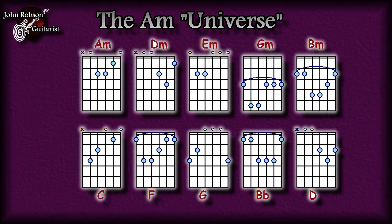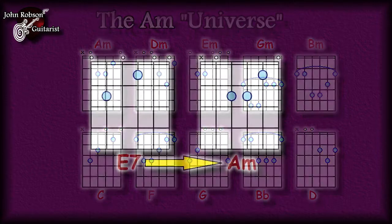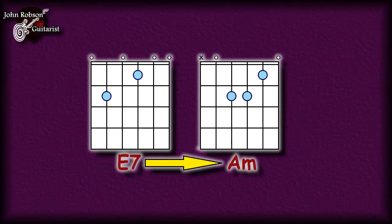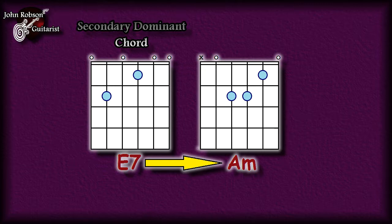You might remember from the previous video on songwriting tips that the A minor universe is simply the name I give to all of the chords which occur in the same keys as an A minor chord. A minor occurs in a bunch of different keys, and if we look at the collective number of chords in all of those keys, they are all related to A minor — I call them the A minor universe. Even though E7 doesn't occur in the A minor universe, we can still use E7 as a secondary dominant chord.